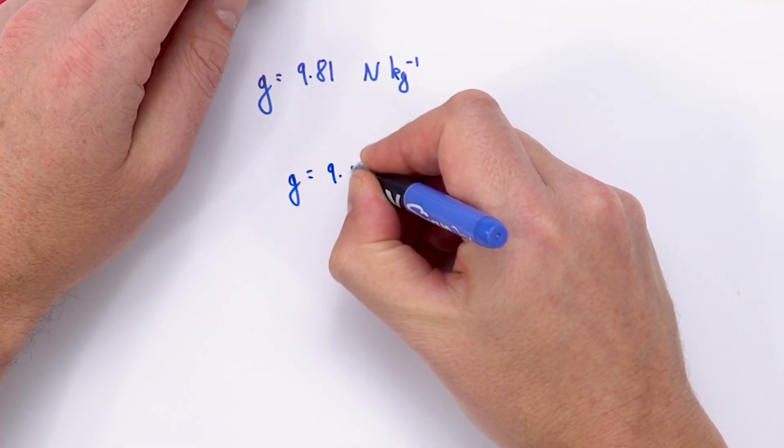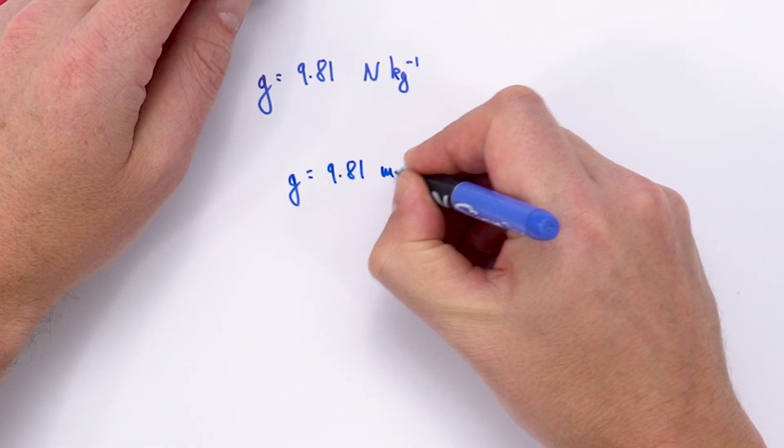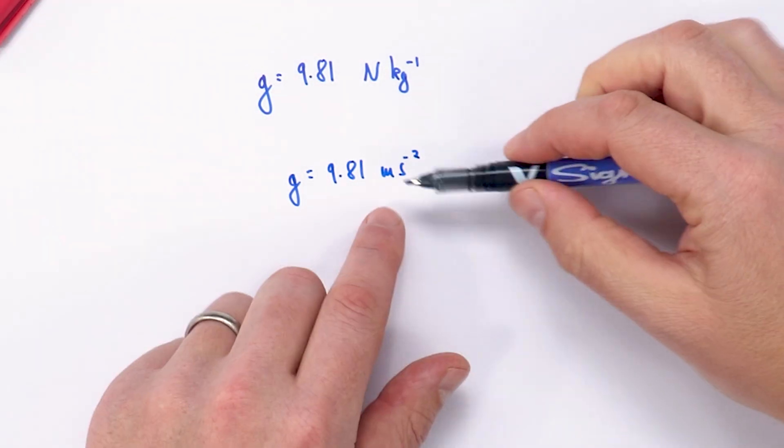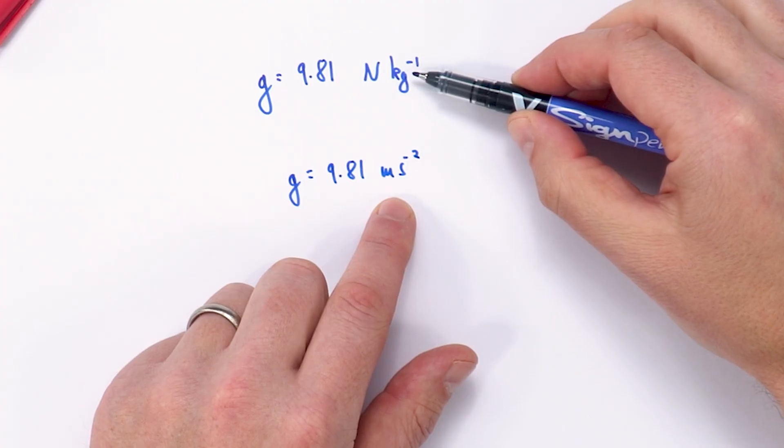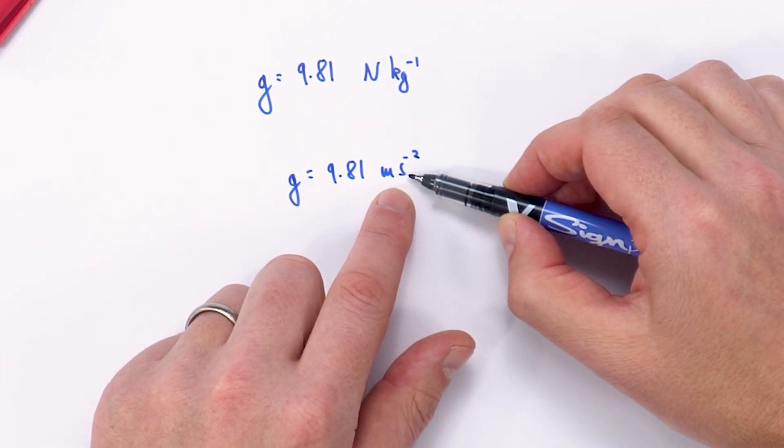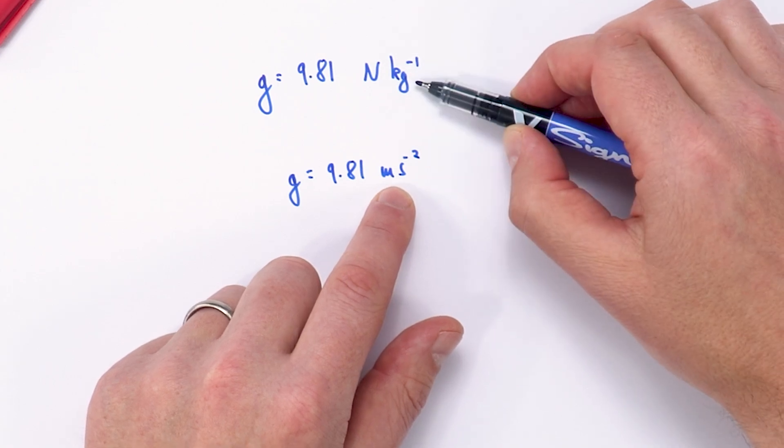Now it also happens to be that if you've got something which is accelerating by freefall on earth then g is also equal to 9.81 metres per second squared. And therefore you can also I guess see that a Newton per kilogram is the same as a metre per second squared but I guess this is really the base units for that value of G.